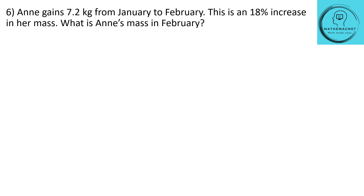Question number 6. Annie gained 7.2 kg from January to February — this is an 18% increase in her mass. What is Annie's mass in February? Your January value will be your base value, and this 7.2 kg is an 18% increase. They give the percentage increase as 18% and ask us to find the mass in February — basically to find 118%.